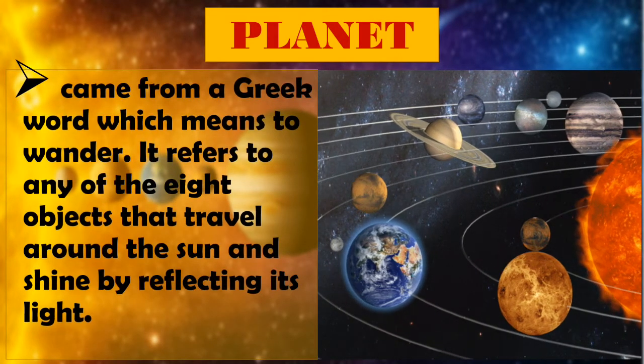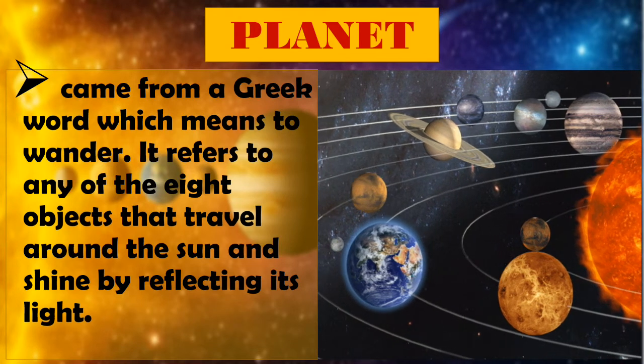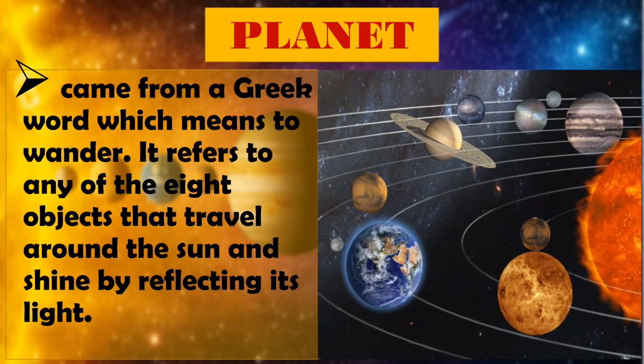Planet came from a Greek word which means to wander. It refers to any of the eight objects that travel around the Sun and shine by reflecting its light.